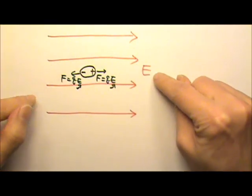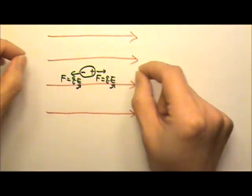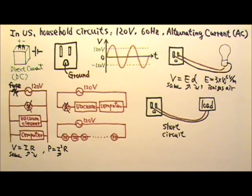For dry air, when the electric field reaches 3 million volts per meter, air molecules get ripped apart, which means air becomes ionized. Now let's get back to electric fire hazards,